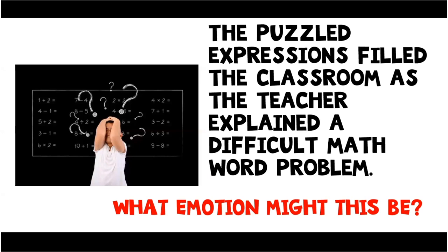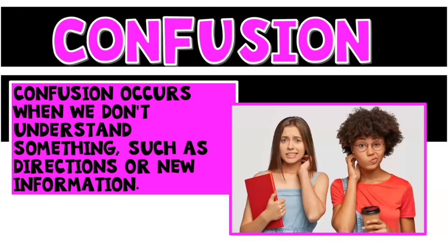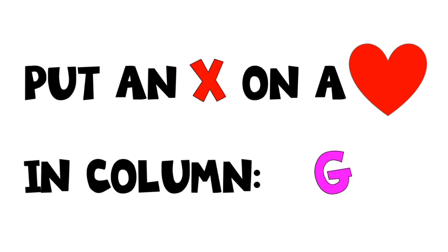Puzzled expressions filled the classroom as the teacher explained a difficult math word problem. What emotion might this be if something looks difficult and confusing? They would feel confusion. Confusion occurs when we don't understand something, such as directions or new information. To feel less confusion, we can ask our teacher for help — such as asking them to repeat the question, solve another problem on the board, or explain it in a new or different way. Put an X on a heart in column G.